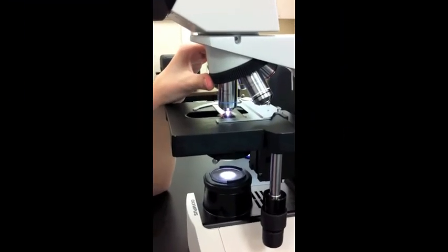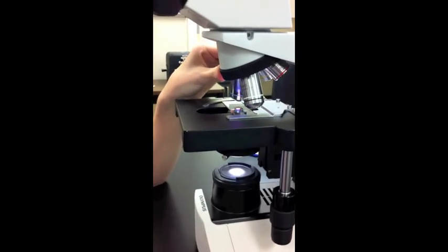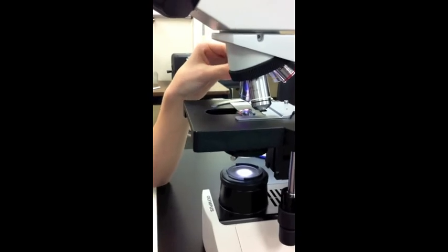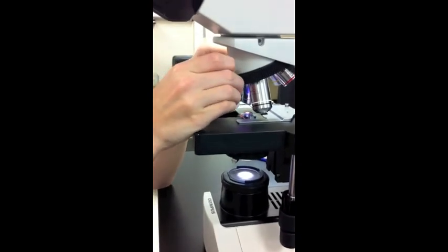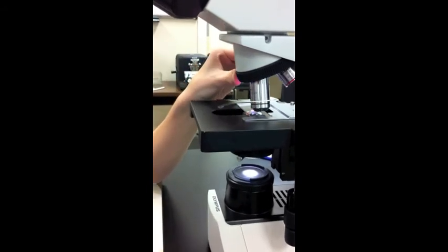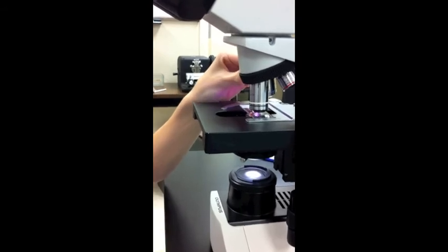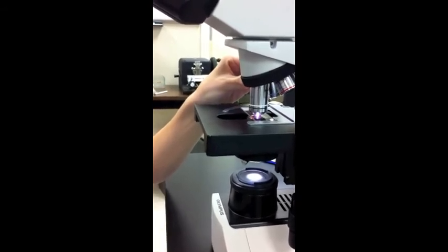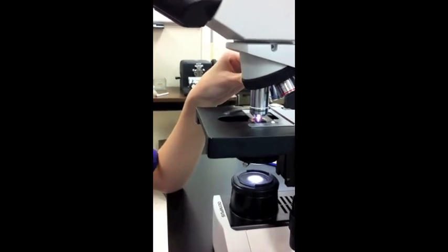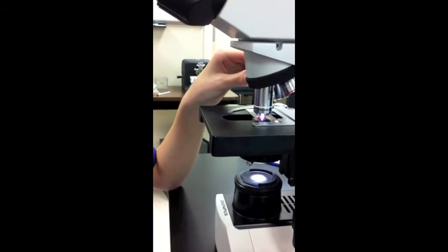Fourteen, rotate the 40X objective clockwise until it and the 100X objective are straddling the specimen. Place a drop of immersion oil directly onto the slide, then click the 100X objective into place. The 100X objective will make contact with the oil and the slide. Do not worry about breaking it because it has a spring-loaded tip. Do not lower the stage to put the oil on the slide. This will only knock your image out of focus.